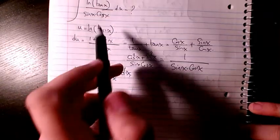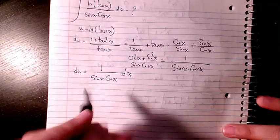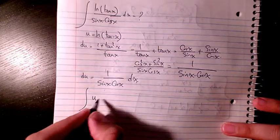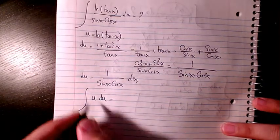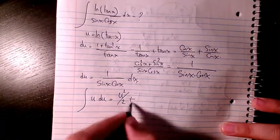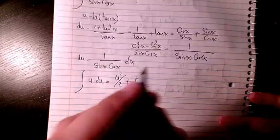That's exactly what we have here. So if we do this substitution, it's going to be just u du. The integration of u du will be u squared divided by 2 plus C.